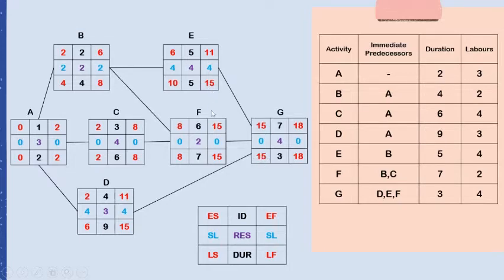The latest finish of activities E, F, and D is fifteen. So fifteen minus five gives a latest start of ten for activity E; the latest start for activity F is eight; and the latest start for activity D is six. The latest finish of activities B and C is both eight. The slack time is calculated as latest finish minus earliest finish. Activities A, C, F, and G have no slack time, so this is the critical path of the project.